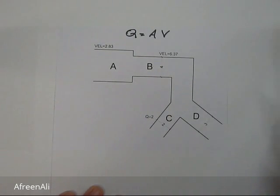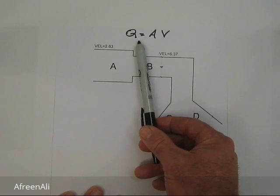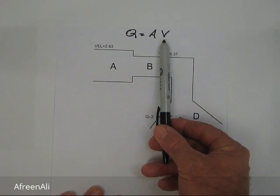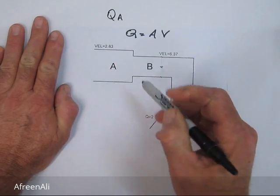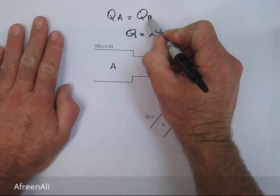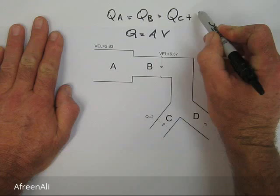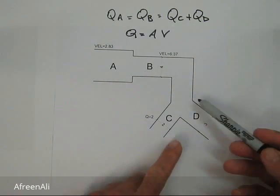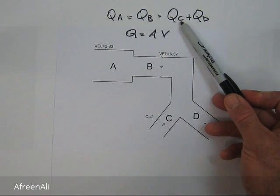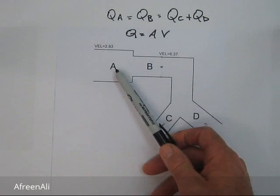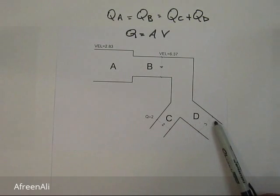That's because we consider water to be non-compressible — it's different for a gas system. Using the formula Q equals area times velocity, we can say the flow rate at A equals the flow rate at B, which also equals the sum of the flow rate at C and the flow rate at D. So we have QA equals QB equals QC plus QD.